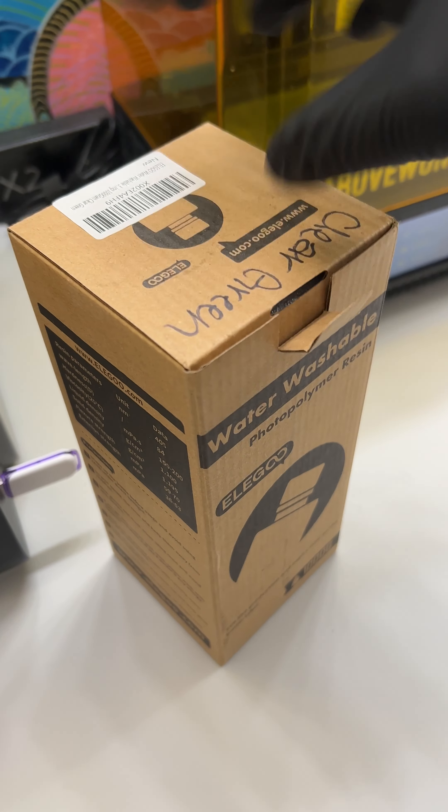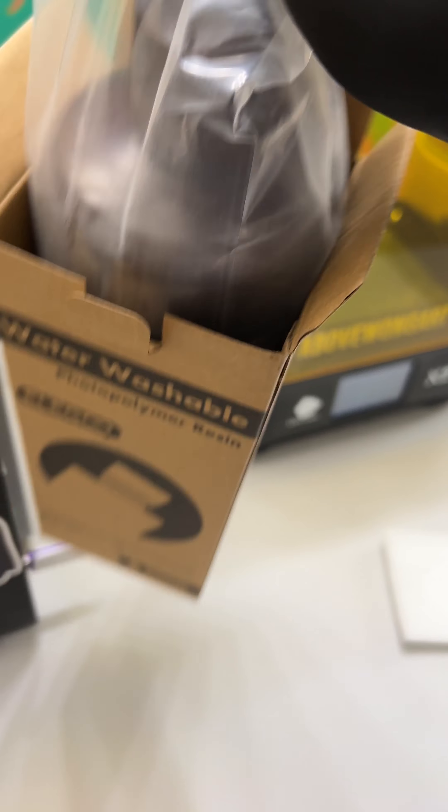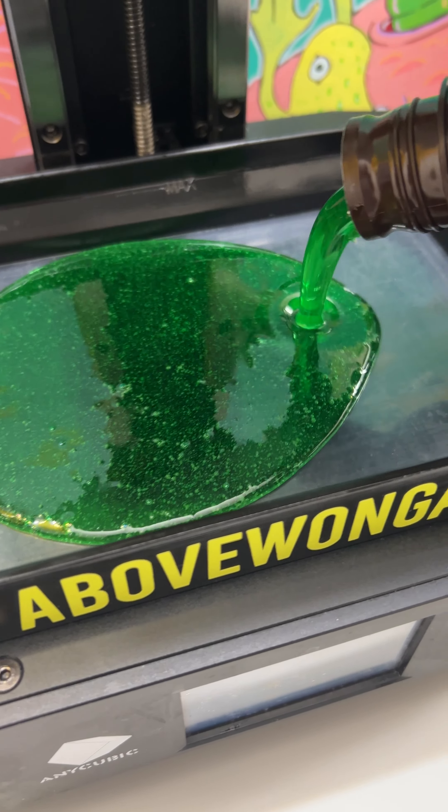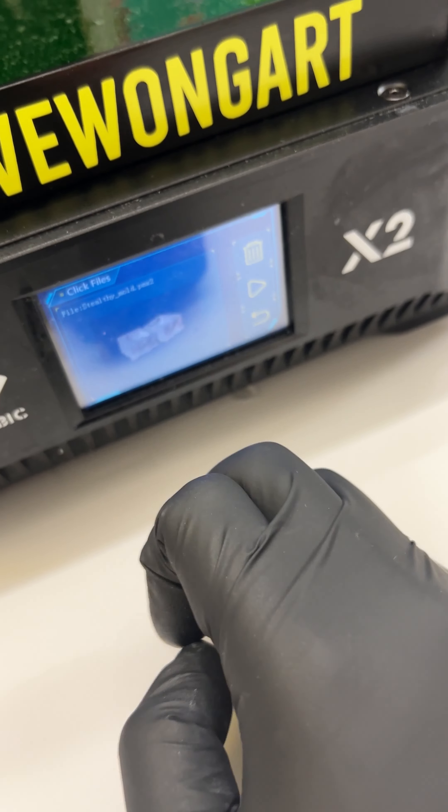I'll be using a water washable resin. This is clear green. Give it a shake to make sure everything is mixed well. And then I pour it into the vat. It looks like melted down green apple Jolly Rancher. Don't eat it. Don't lick it. Don't slurp it.